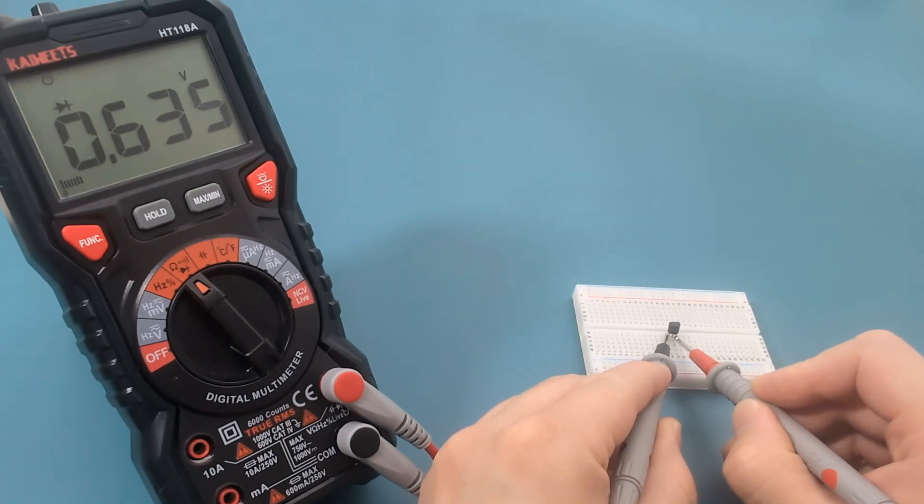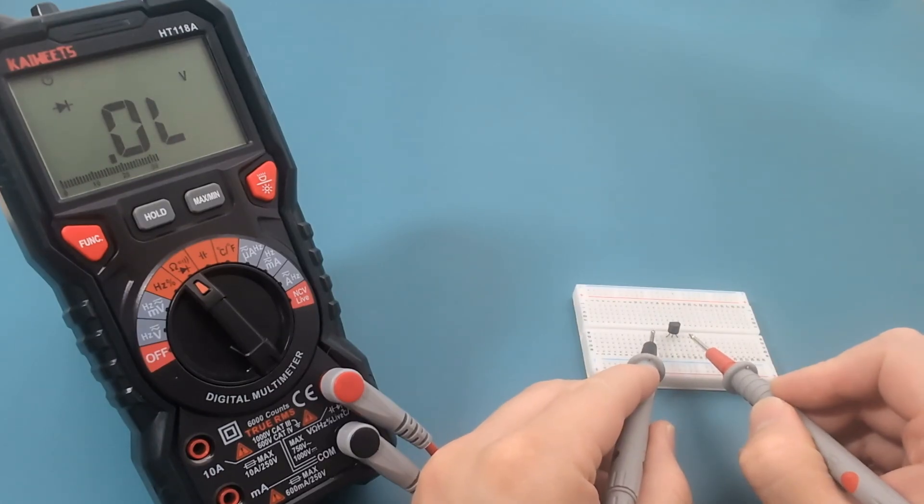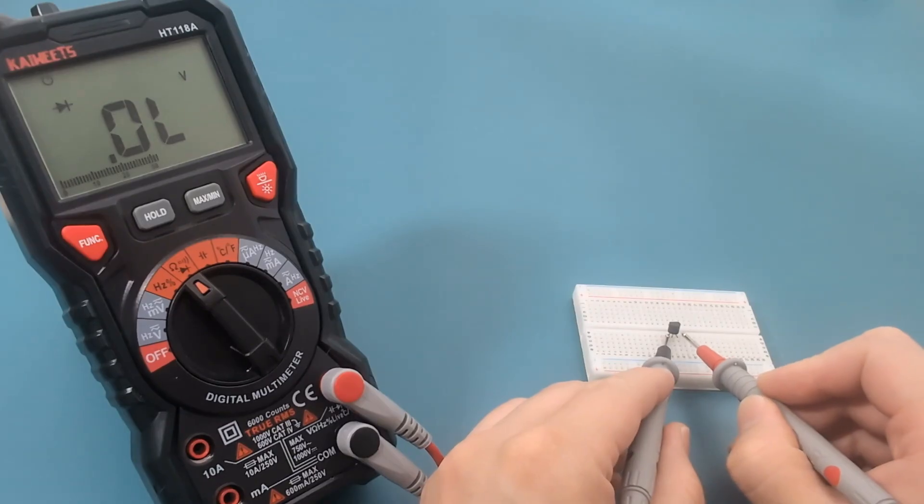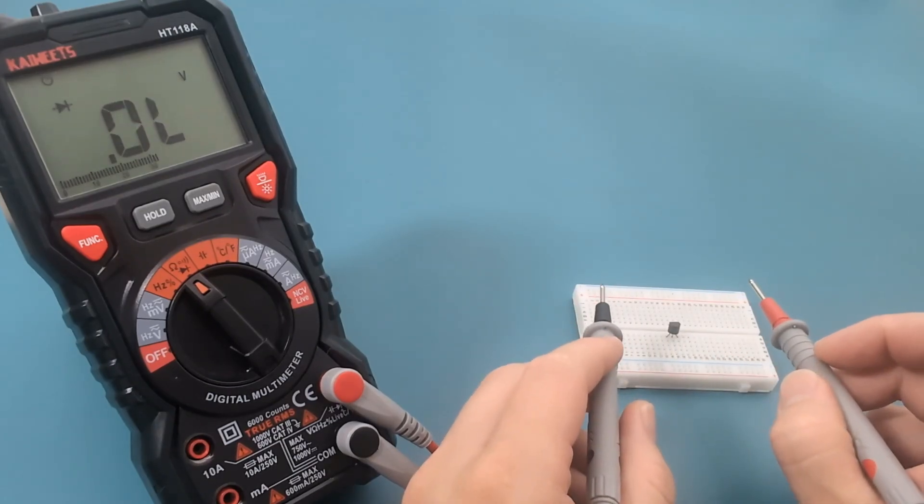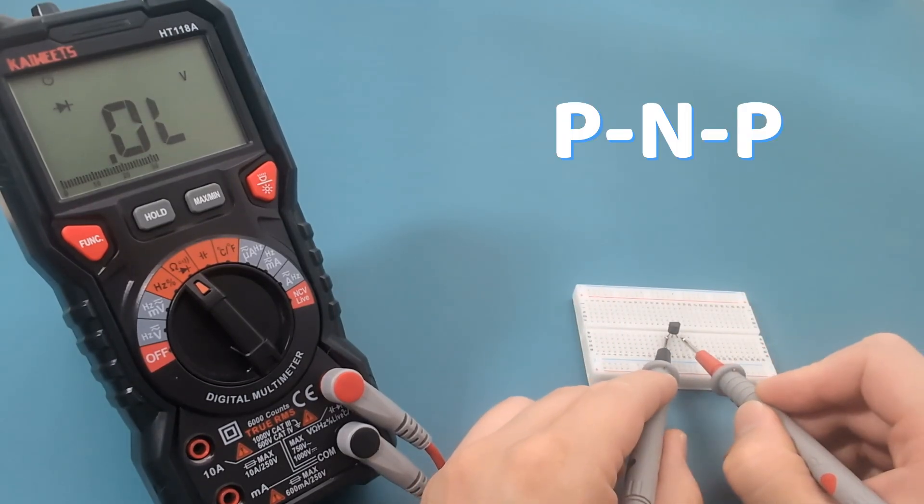We're getting a voltage drop so the first two wires are NP. If I place the black probe on the left wire and the red probe on the rightmost wire, there is also a voltage drop. This transistor is a PNP.